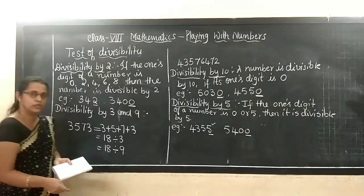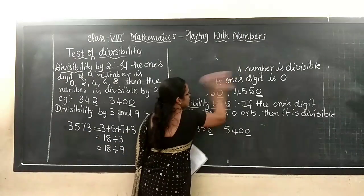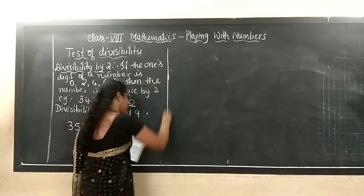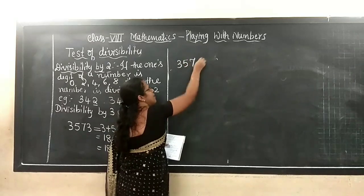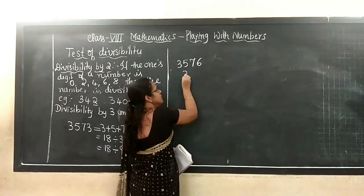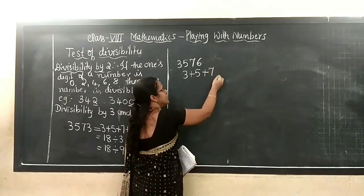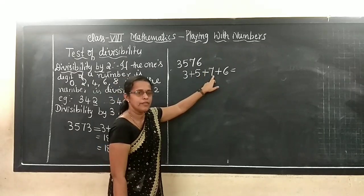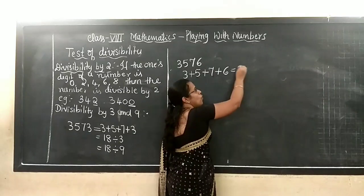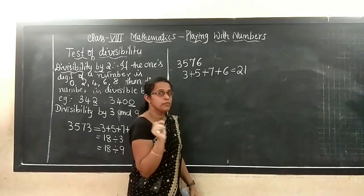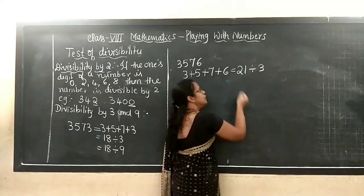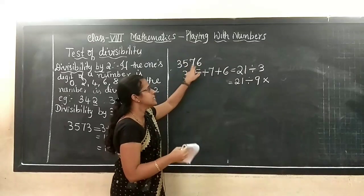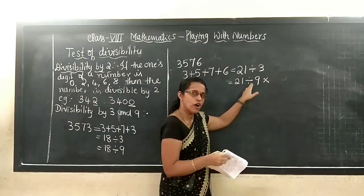Let us take another example: 3576. The sum of digits: 3 plus 5 plus 7 plus 6. 3 plus 5 is 8, 8 plus 7 is 15, 15 plus 6 is 21. Is 21 divisible by 3? Yes. But is 21 divisible by 9? No. That means 3576 is divisible by 3 but not by 9.